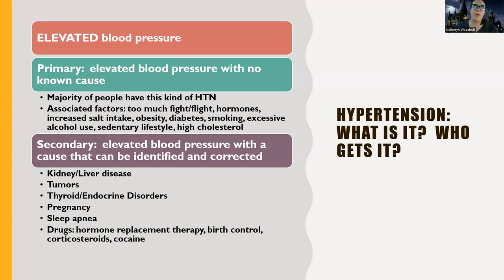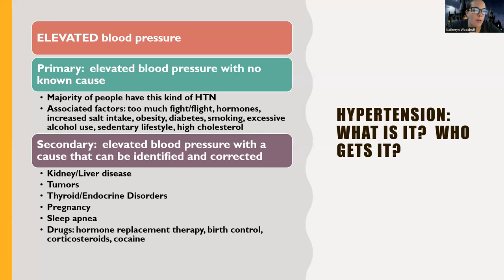The difference between primary and secondary is that primary means we don't really know why — we can try to modify it, but you're always going to have it. Secondary hypertension has an identifiable cause that we can actually reverse sometimes. For example, hypertension during pregnancy may go away once the baby is delivered. With secondary, there's a cause we can modify and the hypertension can actually get better.